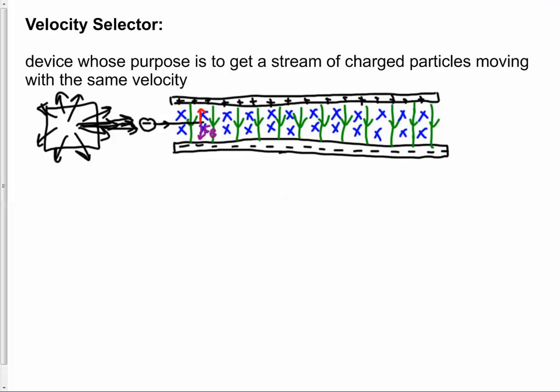So we have a magnetic force going down and an electric force going up. So we have actually competing forces: the electric field is trying to push it upward, the magnetic force is trying to push it downward.